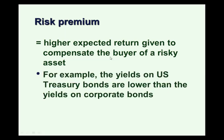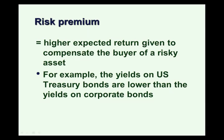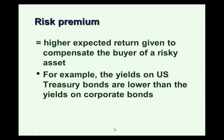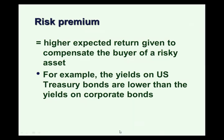For example, the yield on U.S. Treasury bonds tends to be lower than the yield on corporate bonds. This is because corporate bonds have a higher risk of default, and they compensate investors for that higher risk by offering a higher yield so they can be attractive.